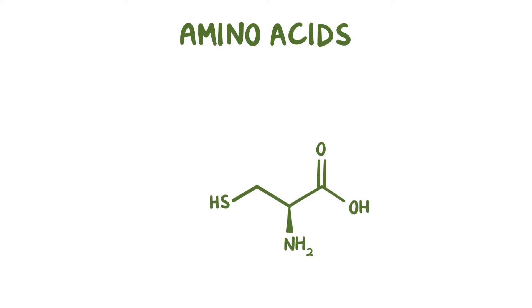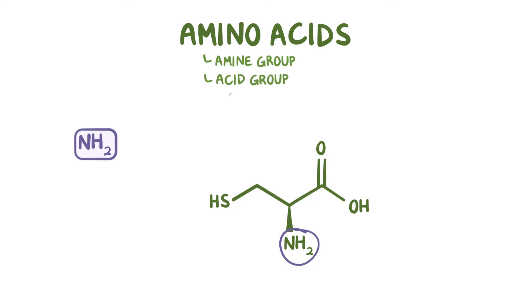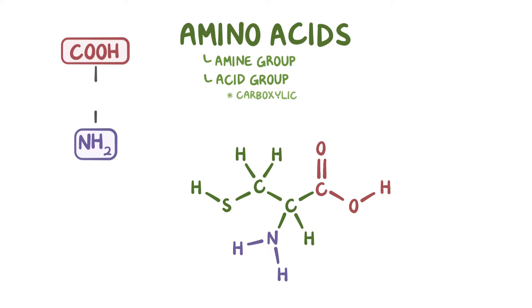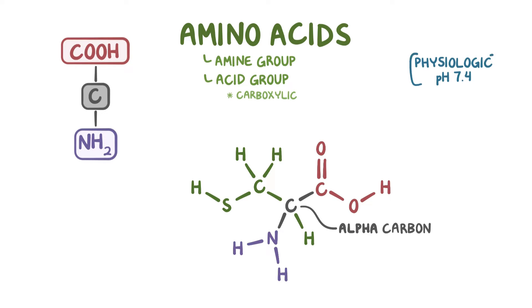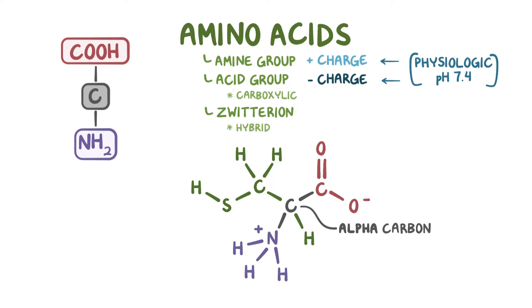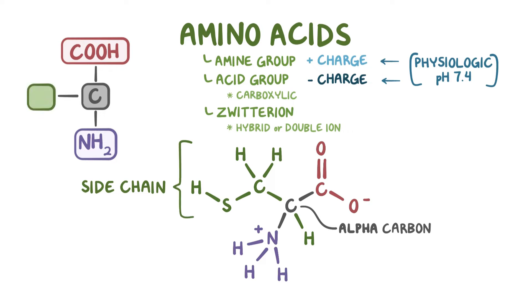The amino acid: just from the name you can tell they've got an amine group, or NH2, and also an acid—in this case a carboxylic acid group, or COOH. The amine and carboxylic acid groups are both bound to the same carbon, called the alpha carbon. The alpha carbon also has a side chain, sometimes marked as R, and this side chain gives the amino acids certain properties, which can play an important role in the overall protein structure.